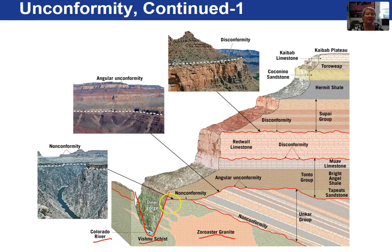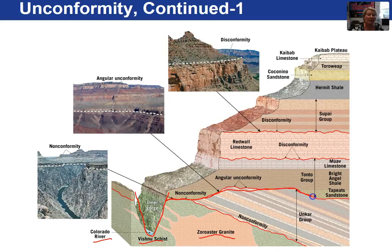Back to the unconformities now. Along here we have a non-conformity because we have metamorphic rocks in contact with flat-lying sedimentary rocks. Here is another non-conformity. From this point all the way over, we have an angular unconformity — a situation where you have tilted sedimentary rocks in contact with flat-lying sedimentary rocks.